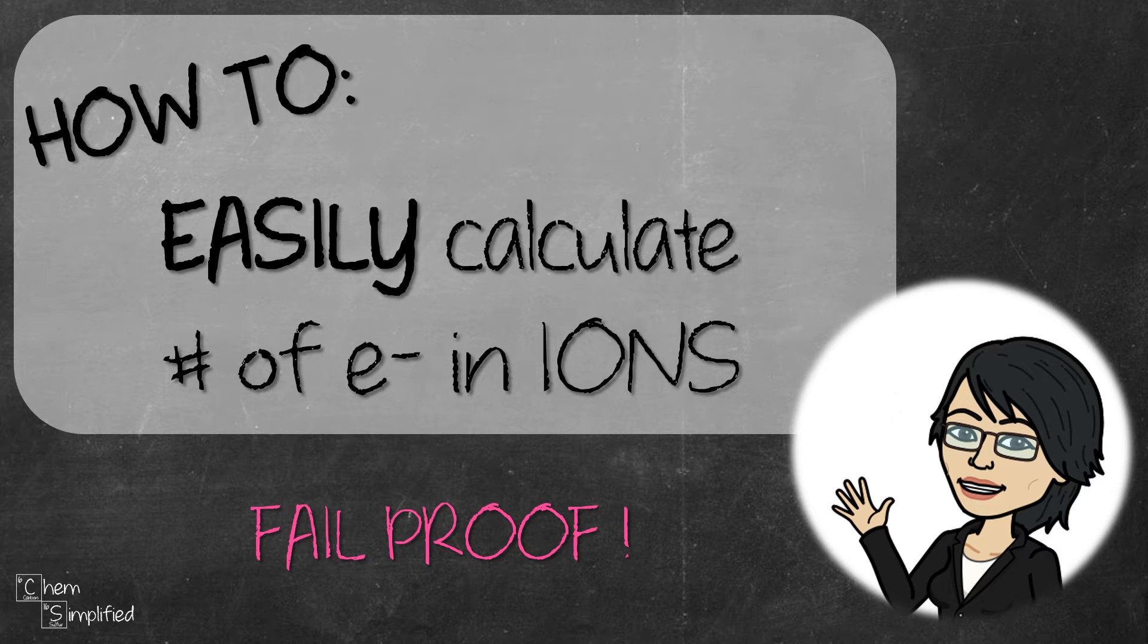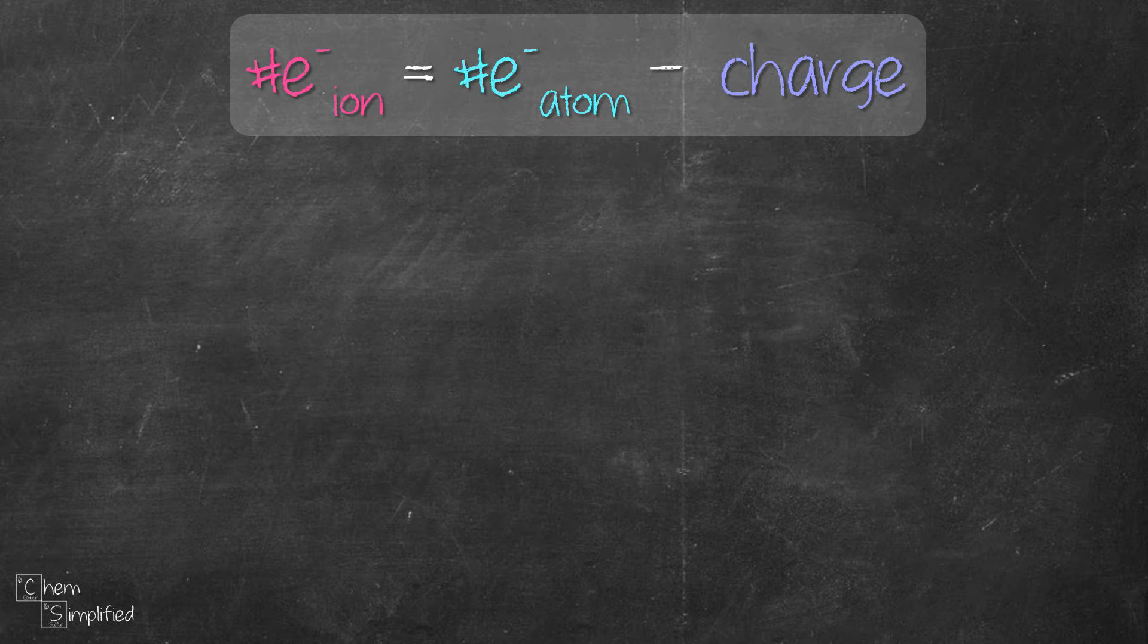In this video, we're going to calculate the number of electrons in ions using a fail-proof method which is super easy. The formula to remember is: number of electrons for the ion equals the number of electrons for the atom minus its charge.